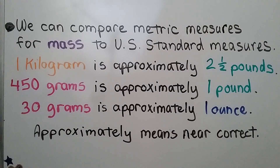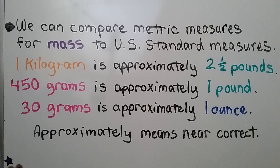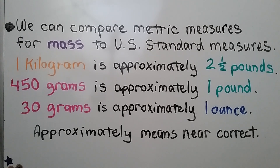We can compare metric measures for mass to U.S. standard measures. 1 kilogram is approximately 2.5 pounds. 450 grams is approximately 1 pound. And 30 grams is approximately 1 ounce. Remember, approximately means near correct — so those aren't exact; that's just about how much they are compared to U.S. standard measures.